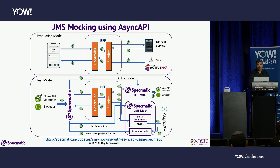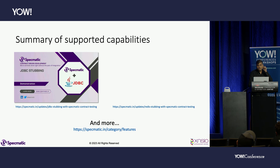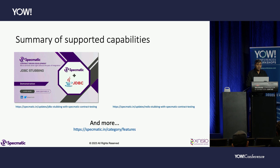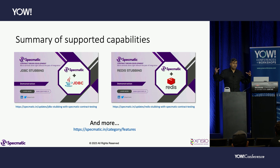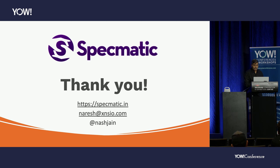Specmatic also supports JMS mocking and JDBC stubbing — many teams have complicated database interactions they need to stub out for testing, and the same approach applies. Specmatic is architected so that each protocol or integration type is a plugin — you can add any new protocol as a plugin. With that, I'll wrap up — hopefully this was useful.